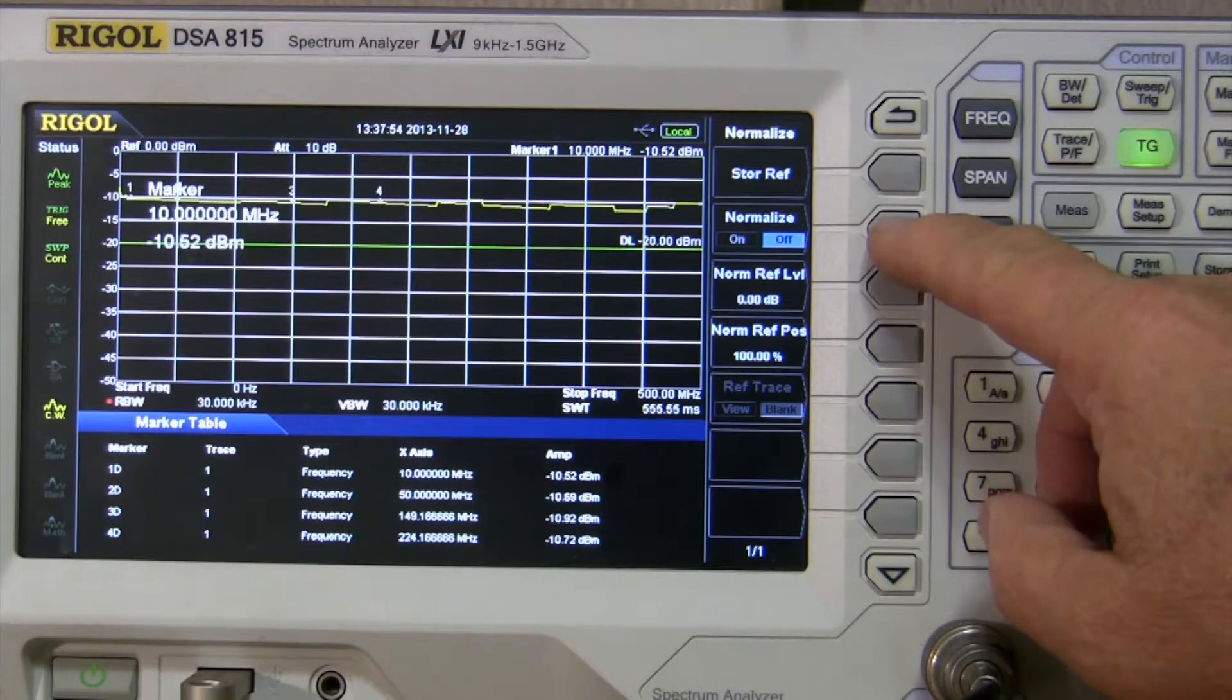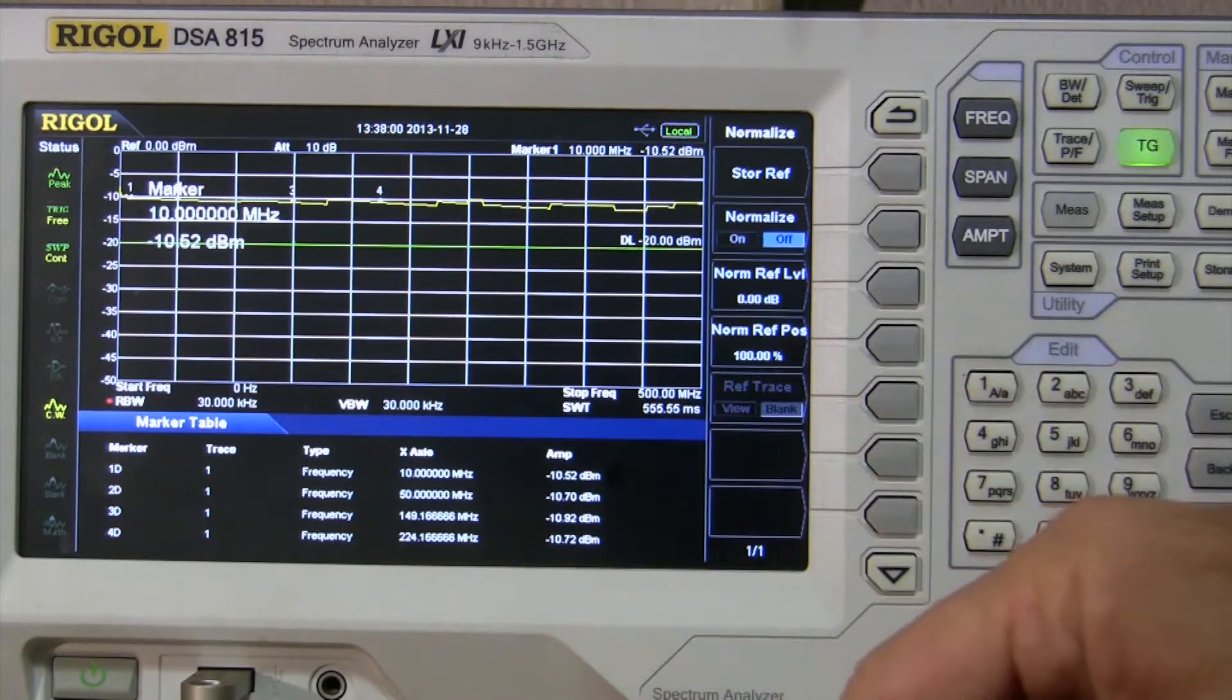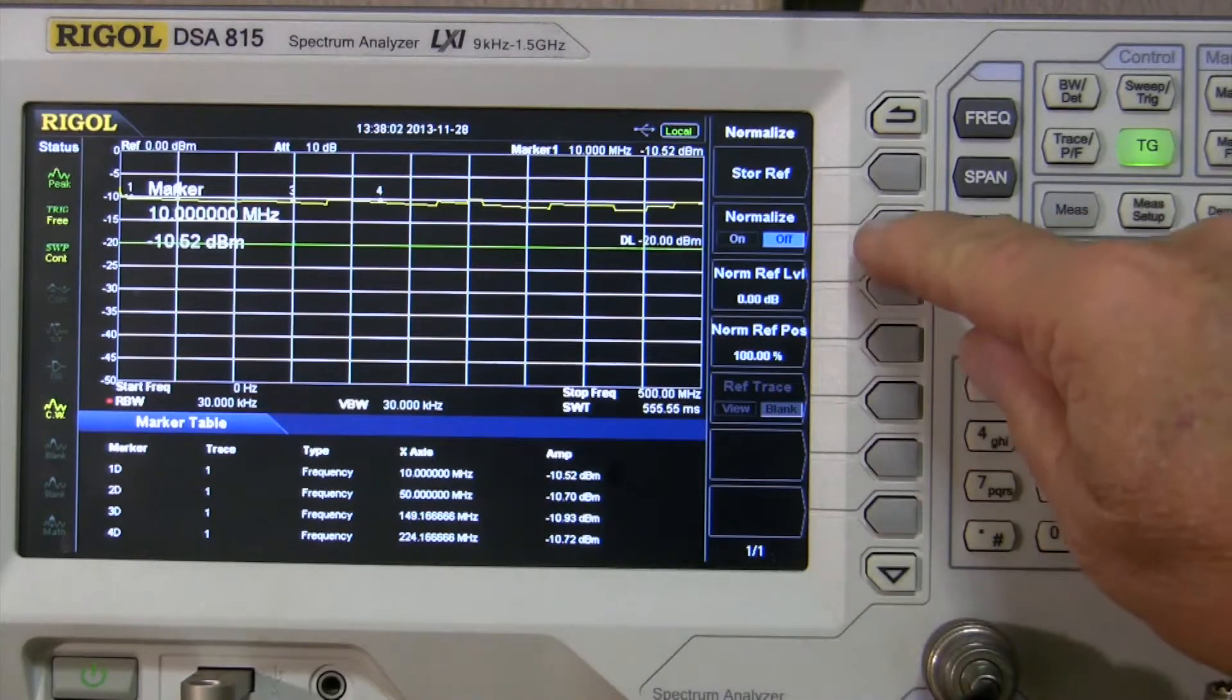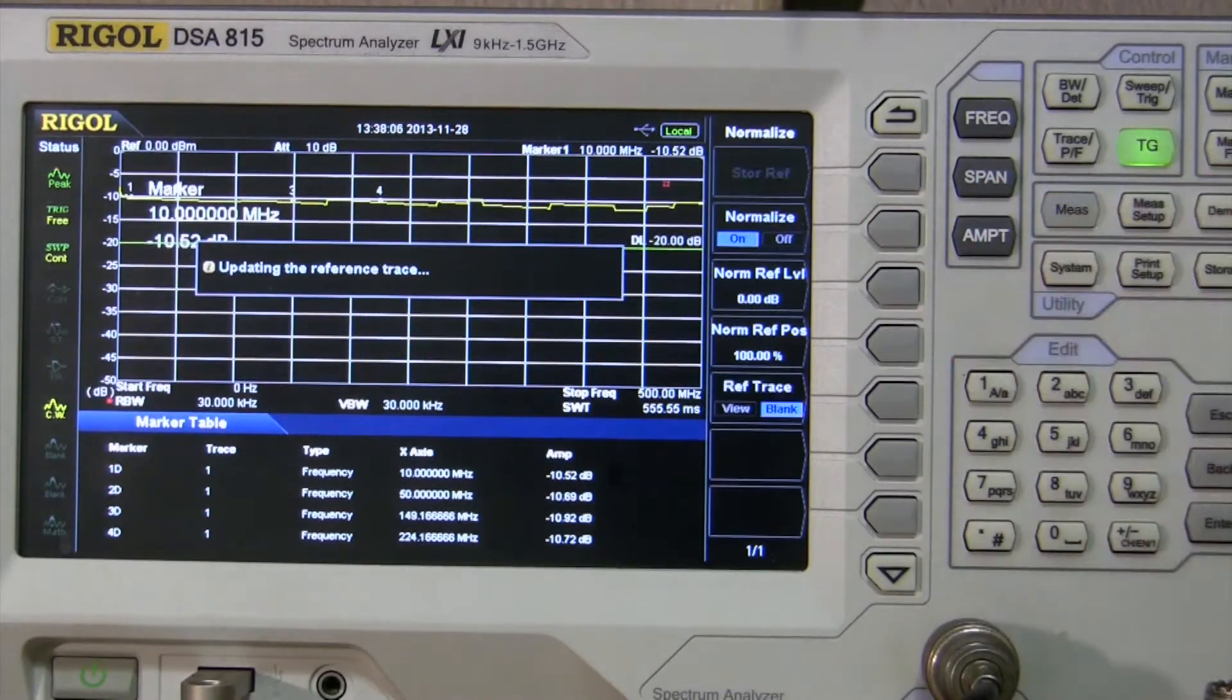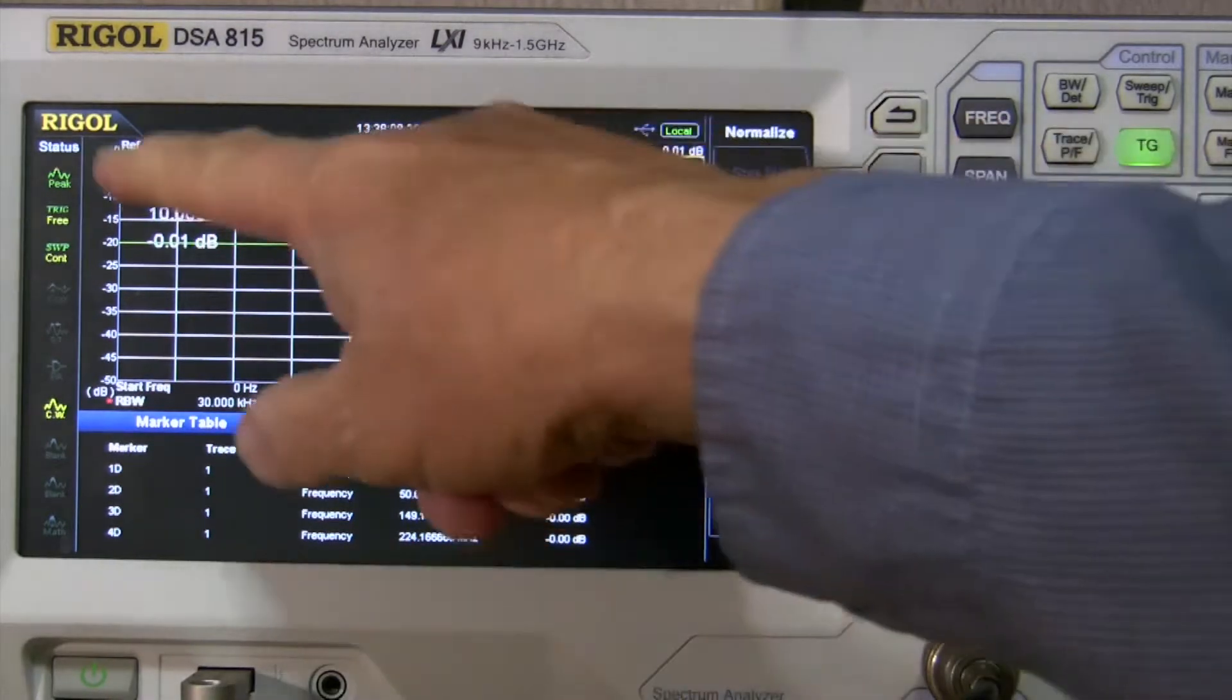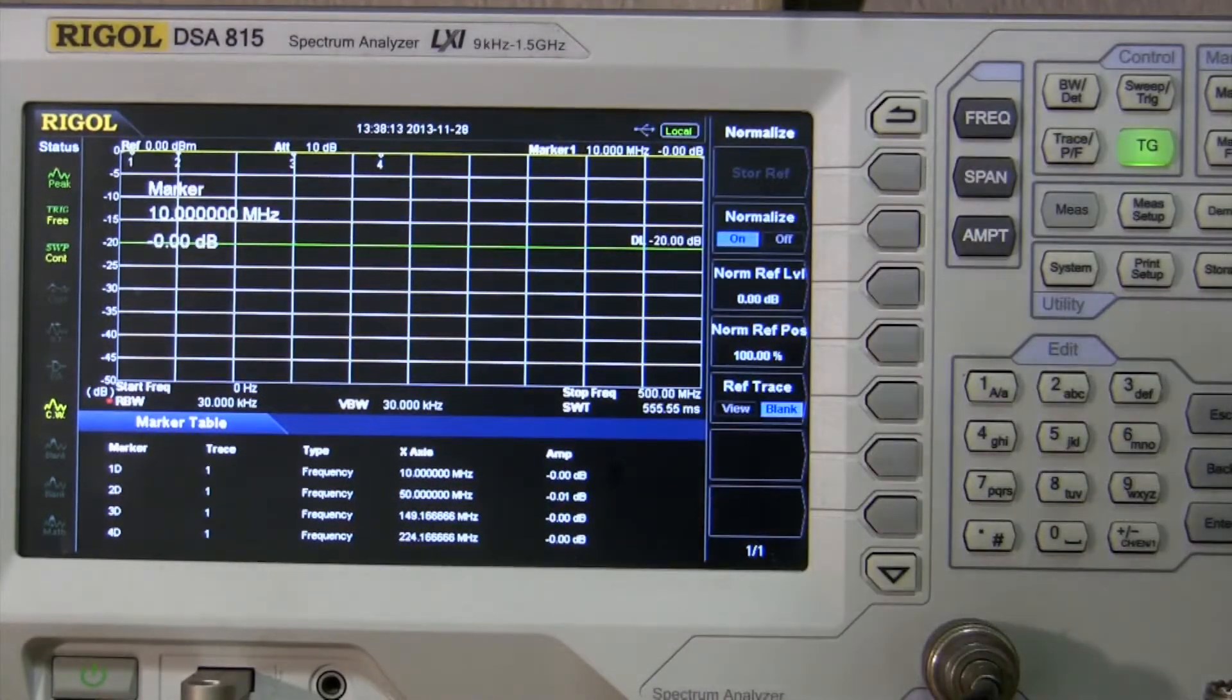We'll go back to tracking generator, go back to normalize. We'll turn this off. There's our minus 10 dB, which is the 6 and the 4 plus any losses in here. We'll push the normalize and it puts it at the zero line up here, and now we got zero, zero, zero.